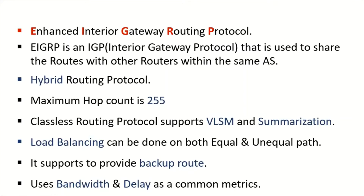EIGRP is a hybrid routing protocol that contains the advantages of both distance vector routing protocol and link state routing protocol. It supports a maximum of 255 hop counts and it's a classless routing protocol that supports VLSM and summarization concepts.